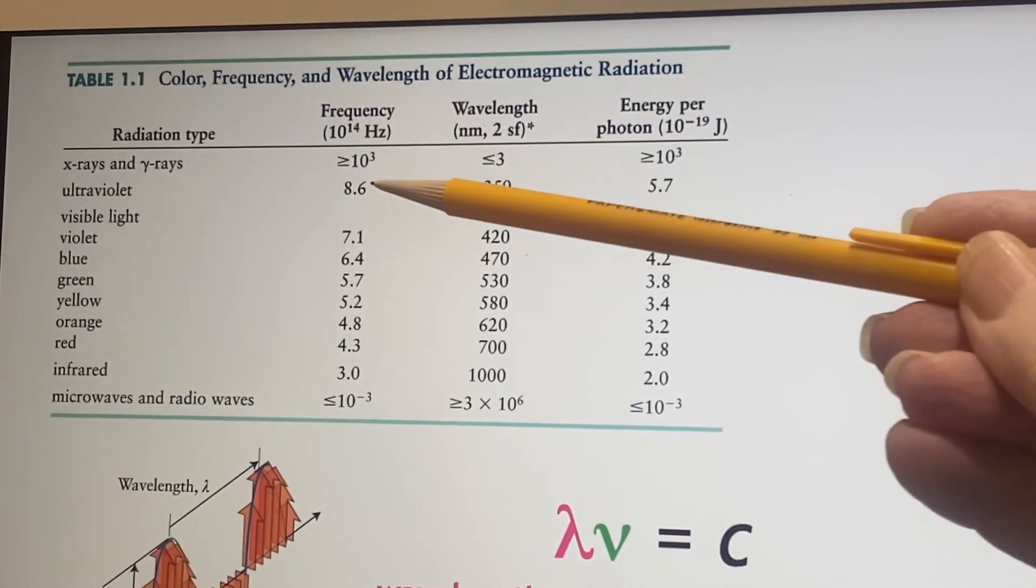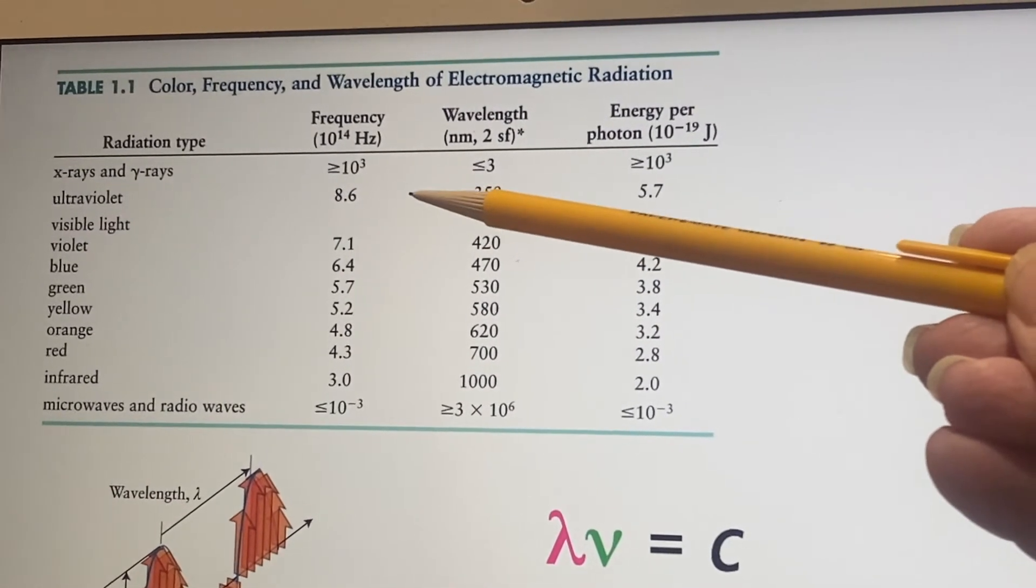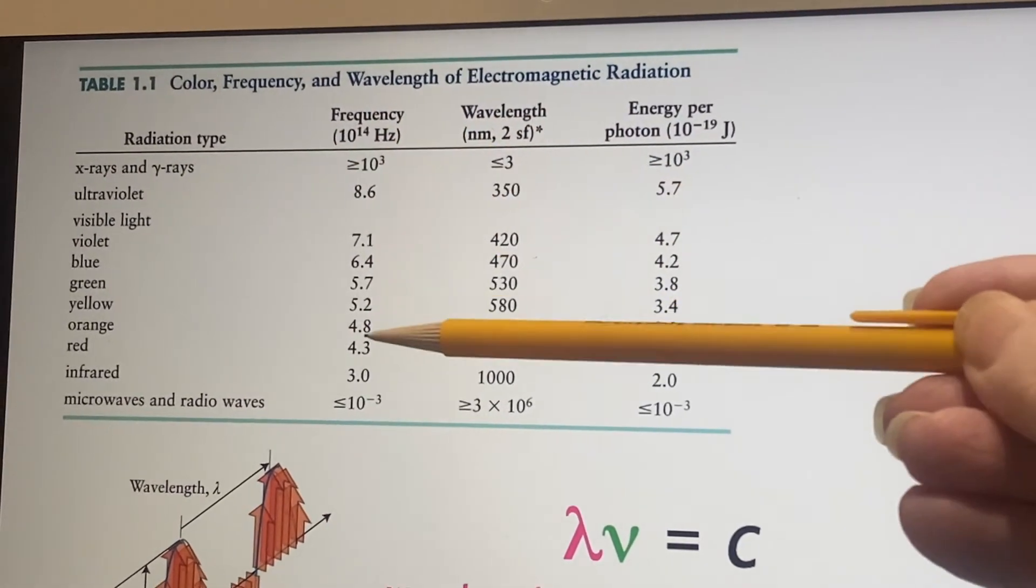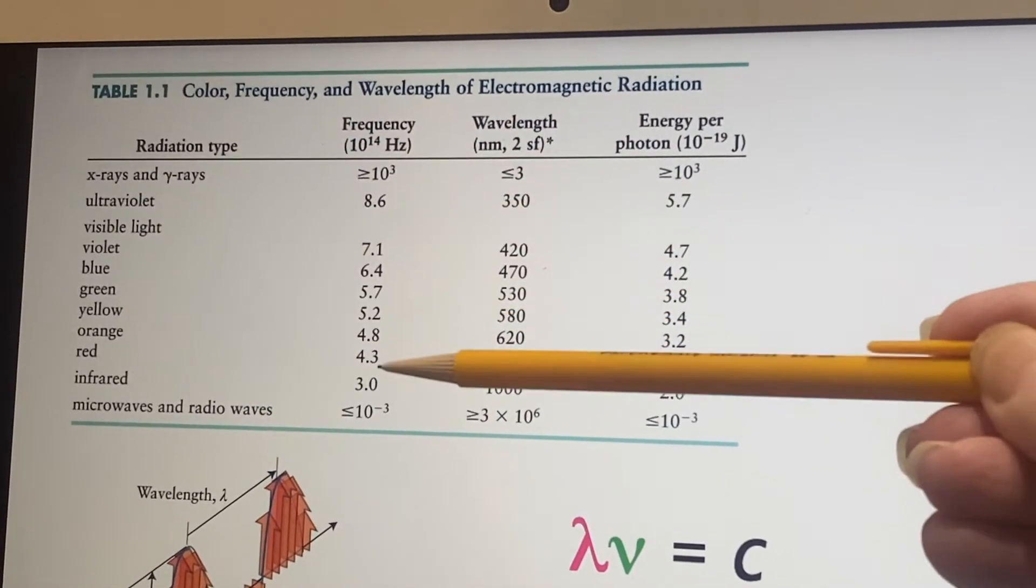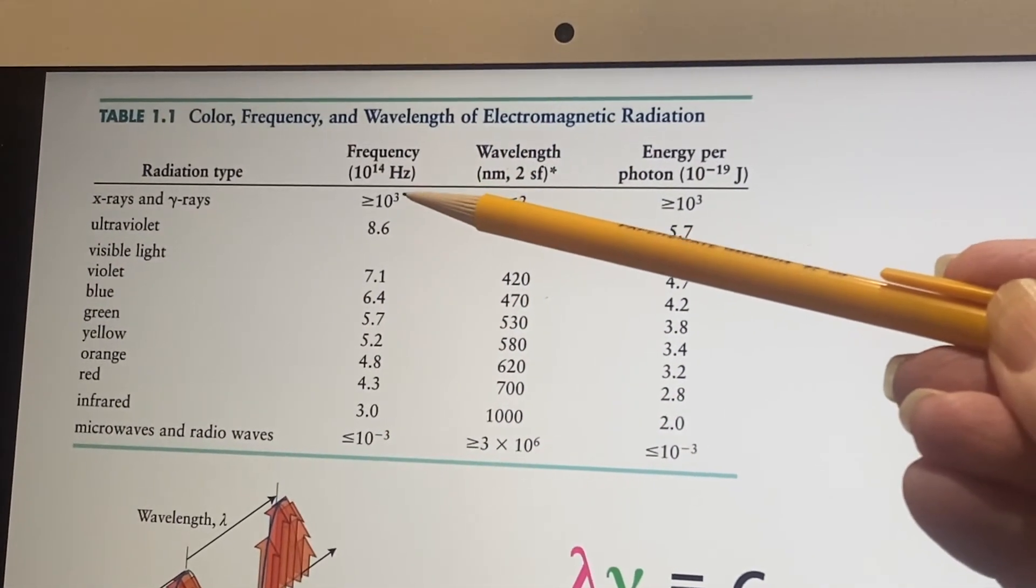Why'd they do it? So that all these numbers wouldn't say, you know, 8.6 times 10 to the 14th. They just decided everything's going to be in here 10 to the 14th. These middle ones, that's easy to make the substitution. The beginning one and the end one are very weird though.